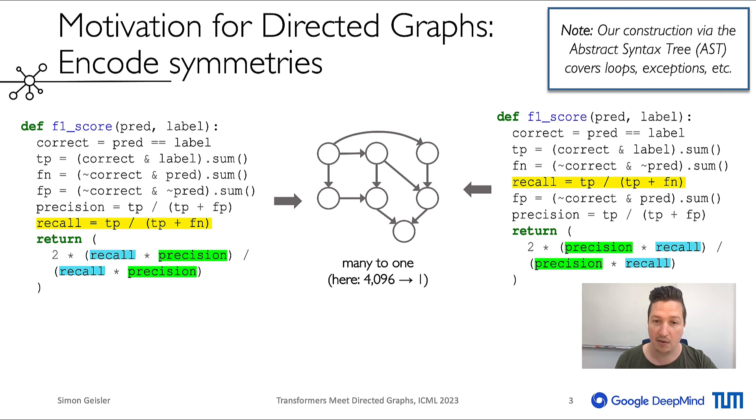For example, the order of some statements can be changed, highlighted in yellow. Moreover, we can flip the order of arguments in commutative operations, here blue and green.